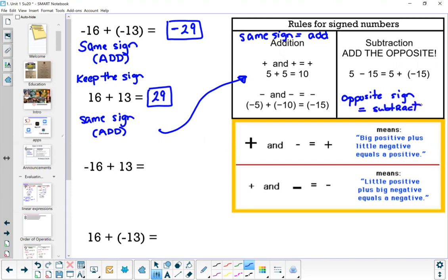Right, so looking at the third example, we're adding a negative number with a positive number. That's opposite signs, so you subtract. All right, now when you subtract, you're going to subtract the number that has the biggest impact. So in this case, it's negative 16.